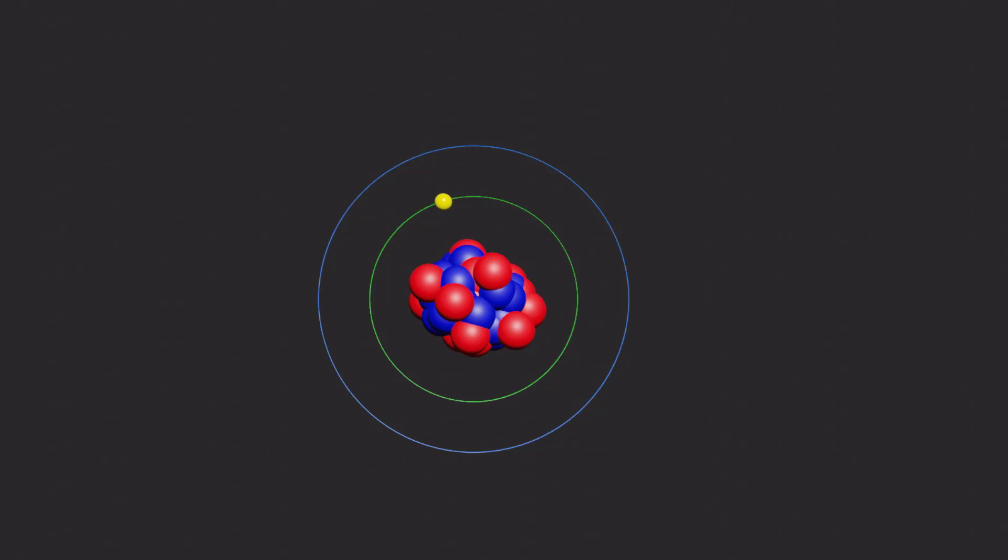The Bohr model postulates that electrons revolve around the nucleus in fixed circular paths called orbit, energy level, or stationary state.